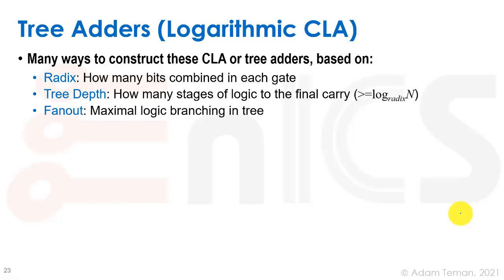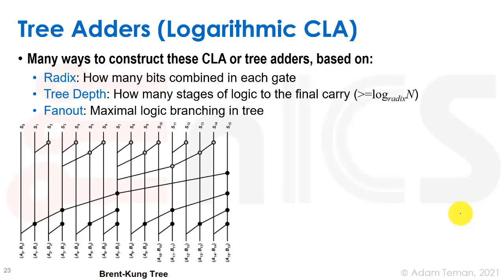This area has been heavily researched, yielding many variants of logarithmic tree adders or carry lookahead adders. They are categorized by three parameters: radix (how many bits combined per gate), tree depth (number of logic stages to the final carry), and fan-out (maximum logic branching). These trade off against each other: higher radix means more complex gates; greater tree depth means more stages; higher fan-out means driving larger loads.